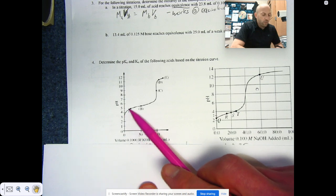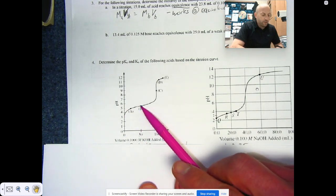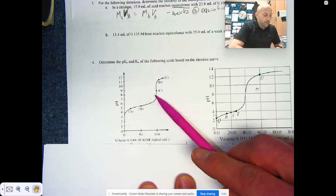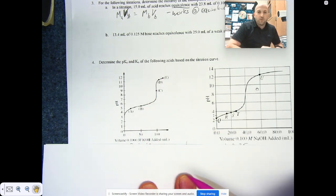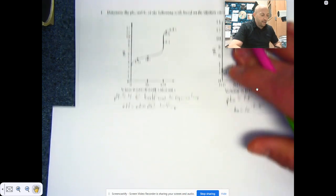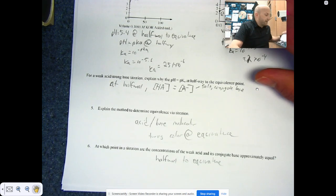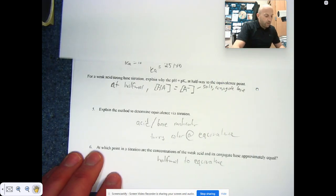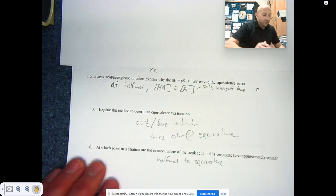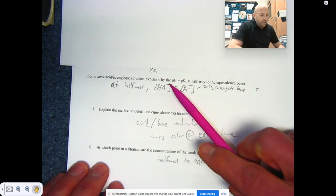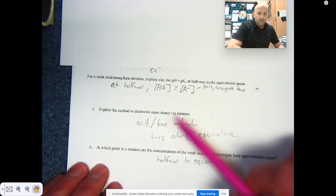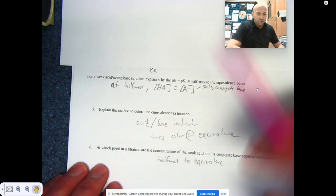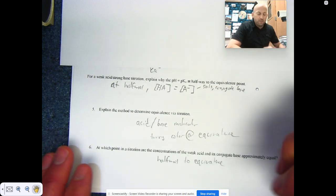This one you probably have a weaker acid, but this is your halfway to equivalence point. This is your equivalence point here. And those are going to influence your pKa and your Ka values. And for a weak acid strong base titration, explain why the pH is equal to pKa. So this is again right from your notes. I don't want to give you the answers to try to do these on your own, but these are here if you need it.